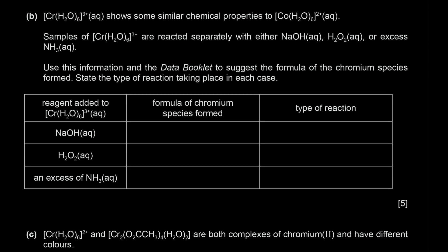This complex [Cr(H2O)6]3+ shows similar chemical properties to the cobalt hexa aqua complex. Samples are reacted separately with NaOH(aq), hydrogen peroxide, or excess ammonia. We need to suggest the formula of the chromium species formed and state the type of reaction in each case. With sodium hydroxide, because we have chromium 3, we form chromium 3 hydroxide: Cr(OH)3.